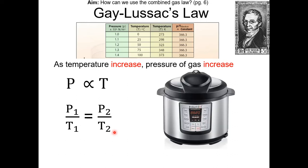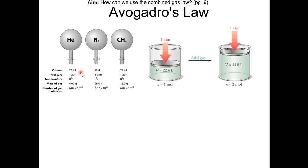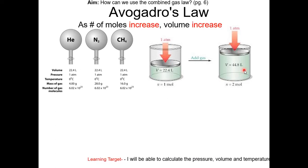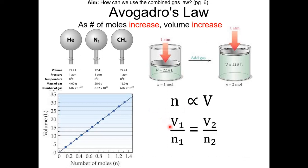A real-life example is a pressure cooker — as you increase the temperature, the pressure inside increases. The last law is Avogadro's law. At STP, one mole of gas takes up 22.4 liters of space. So two moles would take up 44.8 liters. As moles increases, volume also increases — a direct relationship. Moles is directly proportional to volume. The equation is V1 over N1 equals V2 over N2.